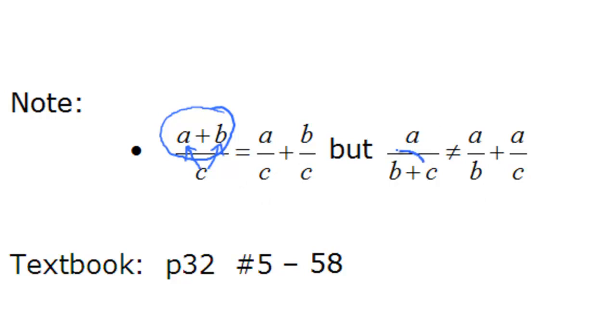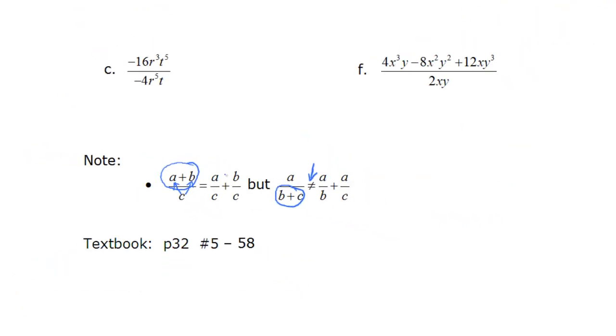However, if the addition or subtraction is in the denominator, there's nothing we can do. So at this point, we're not going to simplify those at all. We're going to leave them as they are. But if the addition and subtraction is in the numerator, we break it into individual pieces. And we'll see that in examples e and f.